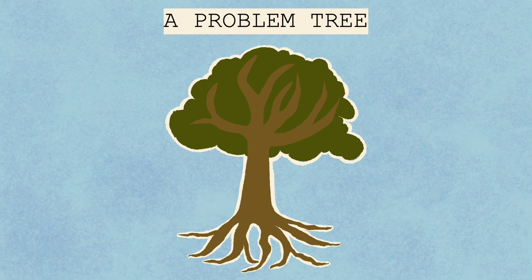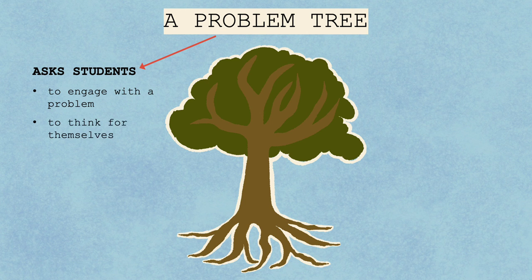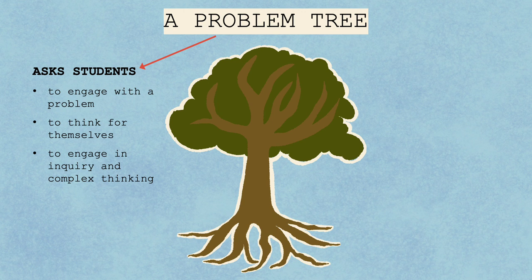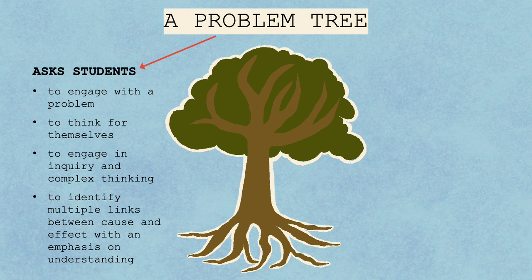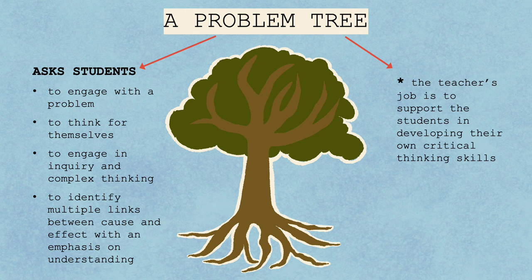As you can see, a problem tree is a teaching tool that asks students to engage with a problem and think for themselves to determine possible causes and effects. It invites students to engage in inquiry and encourages complex thinking about multiple causes and effects. The problem tree asks students to identify the multiple links between cause and effect, with an emphasis on understanding the problem broadly and with some complexity. In this approach, the teacher's job is to support the students in developing their own critical thinking skills.